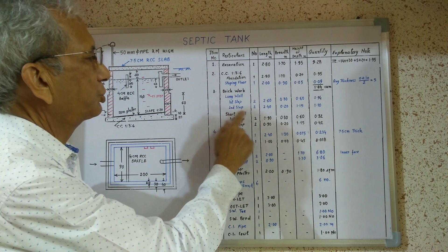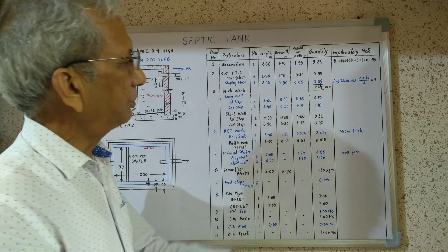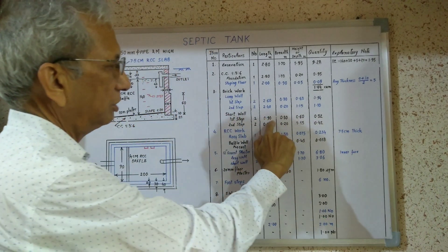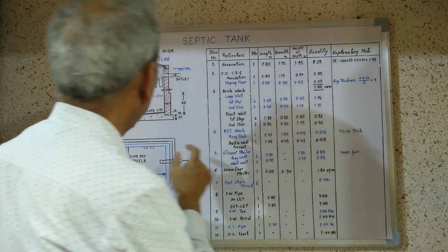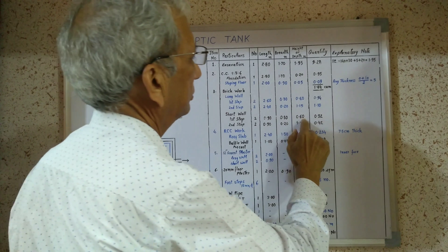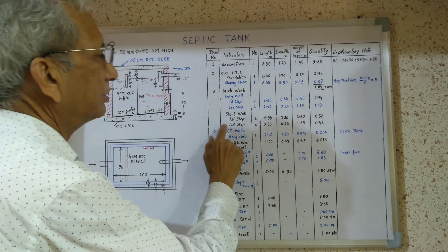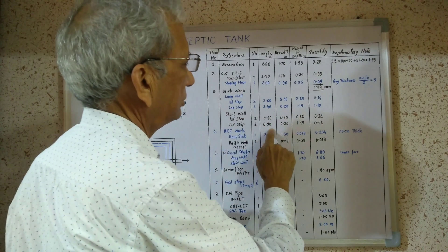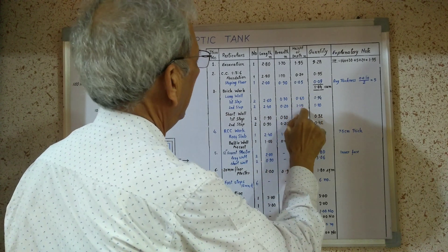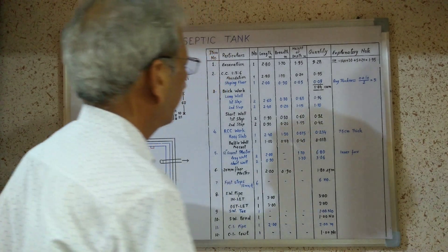Similarly, short wall first step — two number short walls. As corners have been accounted for in the long wall, we take only the internal size without corners: 90 centimeters long, wall width 30 centimeters, height 60 centimeters. Result is 0.32 cubic meters. Second step — two number short walls, internal size 90 centimeters, thickness 20 centimeters, height same as long wall 1.15 meters. Result is 0.42 cubic meters.